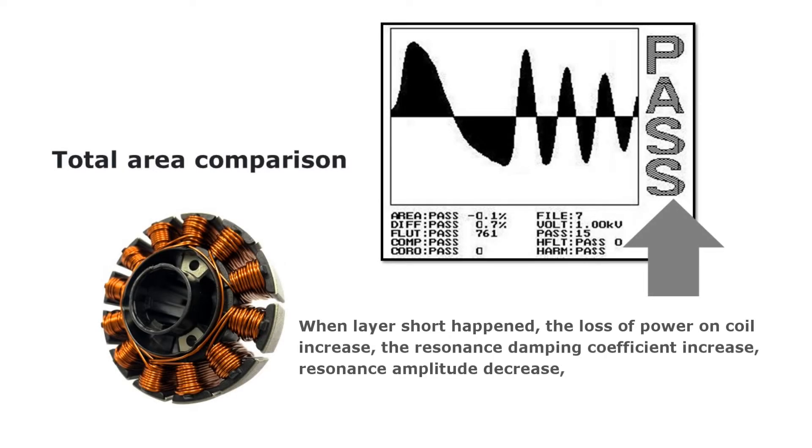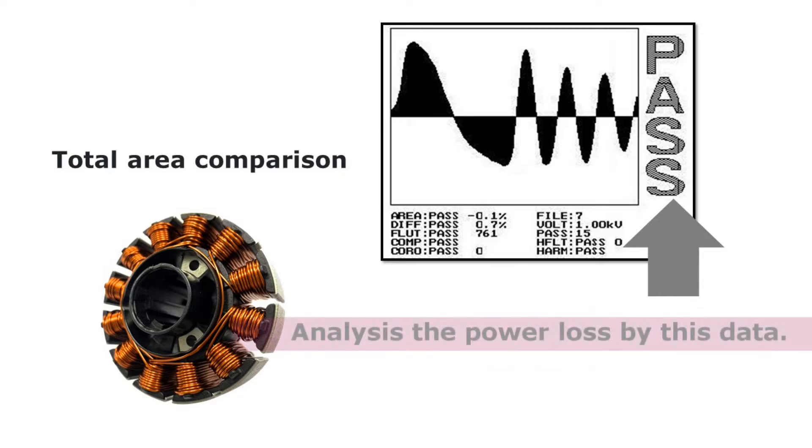Total Area Comparison works by calculating and comparing the difference of area between the golden sample and DUT.